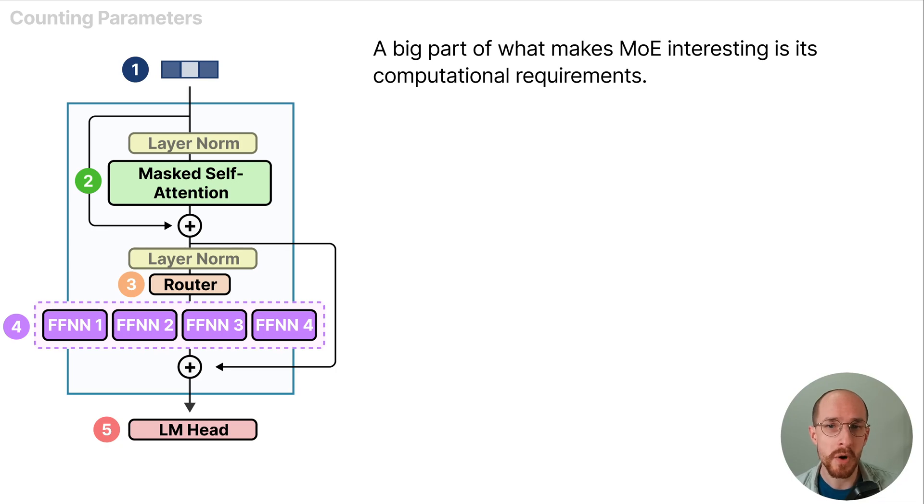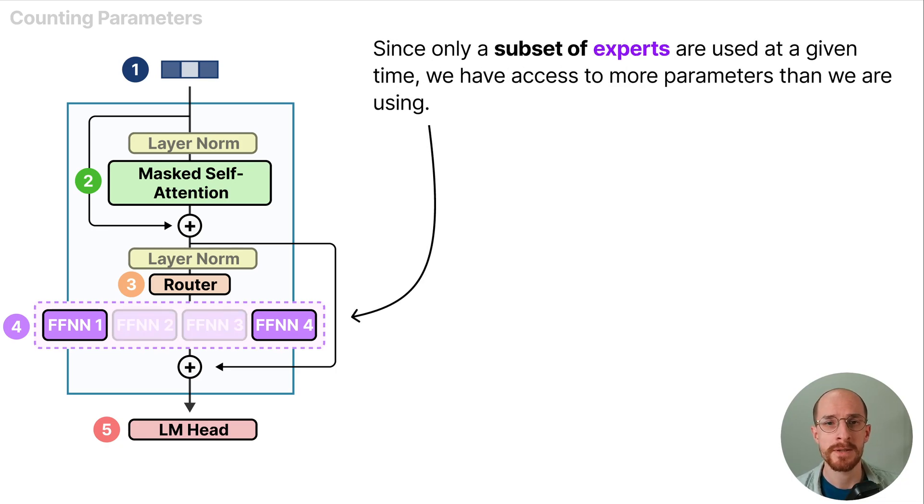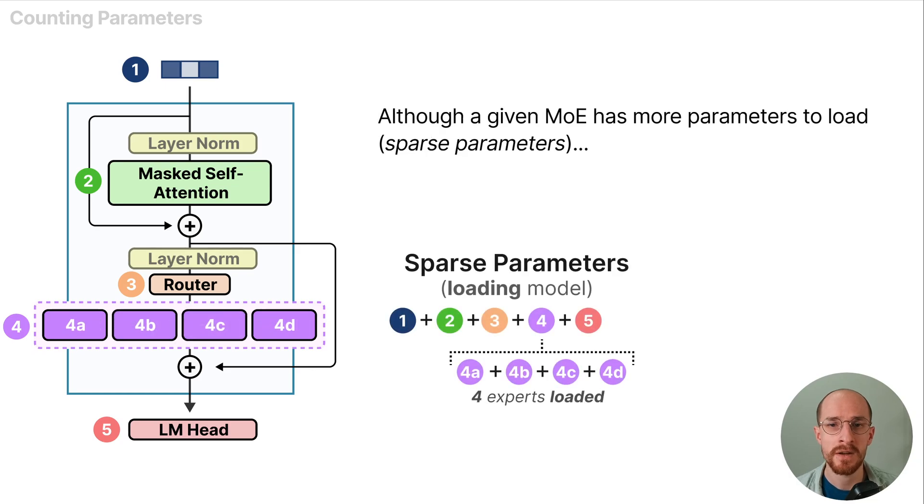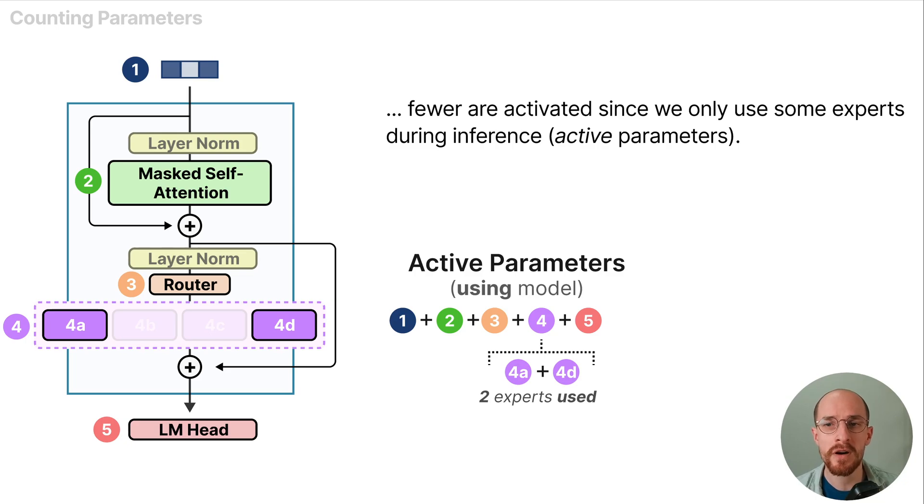A big part of what makes MoE interesting is its computational requirements. Since only a subset of experts are used at a given time we have access to more parameters than we are actually using. Although a given MoE has more parameters to load which we call the sparse parameters, fewer are activated since we only use some experts during inference. We call these the active parameters.